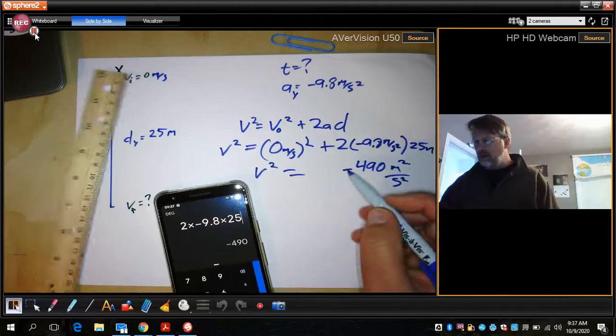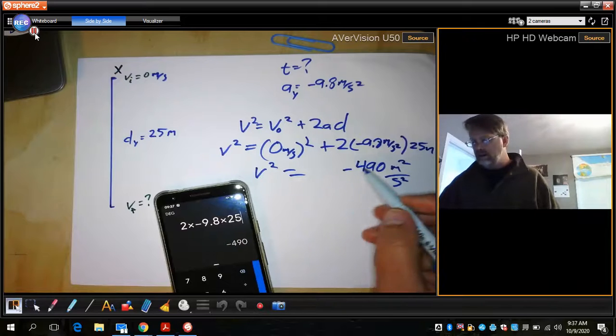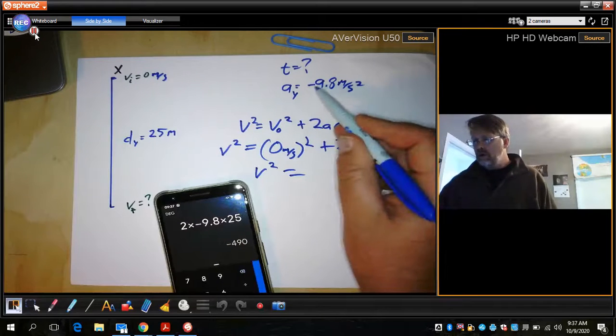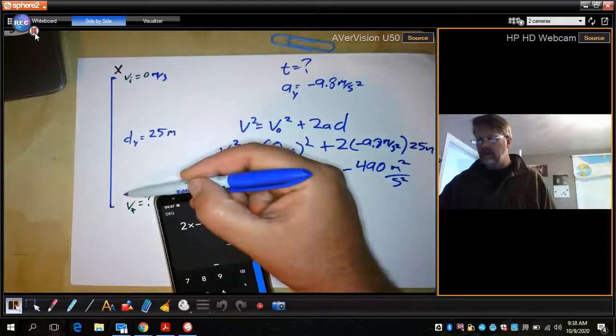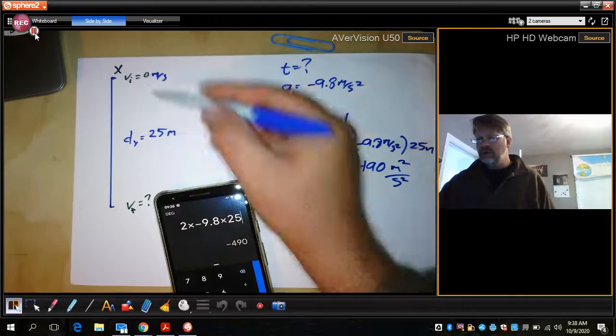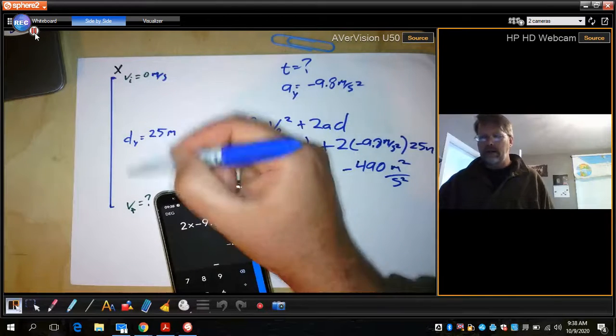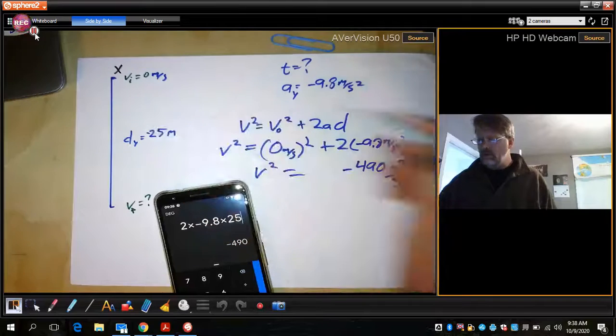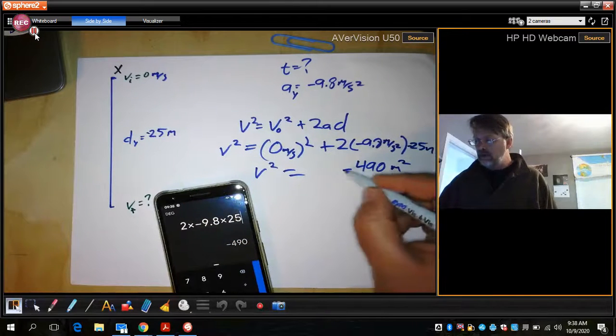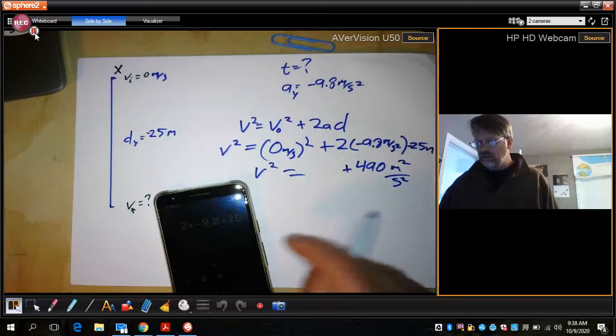So we need to think about where did our signs come from. Negative 9.8 is because it's accelerating down. 25 meters is also how far down it went. So we need to make sure those are also negative, which is going to make this positive.